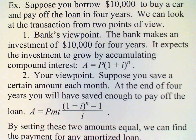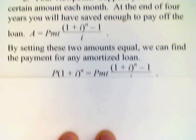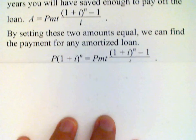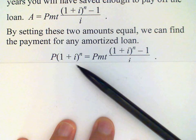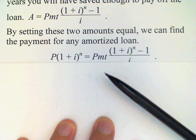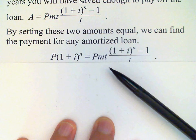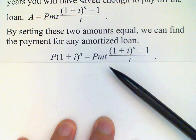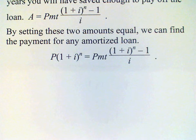In the amortization scheme, in order to reconcile these two viewpoints, we just set these two amounts equal. So the amount that the bank expects — P times one plus i to the n — is equal to the amount that you save through this annuity over that same period of time.